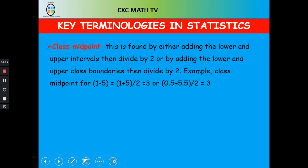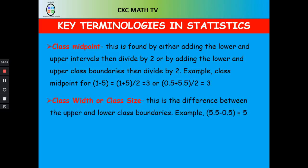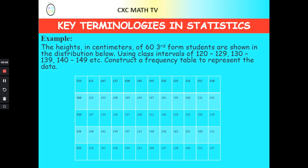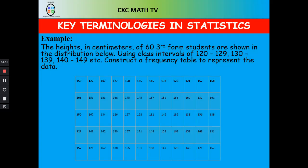The midpoint of a class interval is found by adding the upper class limit and the lower class limit and dividing by 2. You also need to know class width, or class size, which is the difference between the upper class boundary and the lower class boundary. These concepts are easy once you practice with questions.